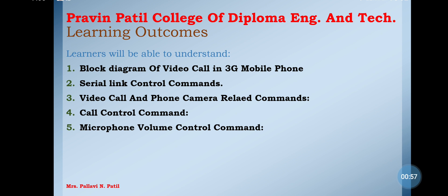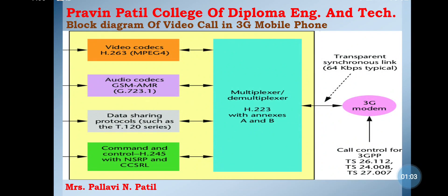Let's see the first block diagram of video call in a 3G mobile phone. The mobile phone has nowadays become a necessity for individuals. The mobile is becoming smarter and the interface with all services and the internet has become necessary. The increased data rate in GSM network allows the user to use video calling and camera-related applications. This has now become an integral part of the mobile.